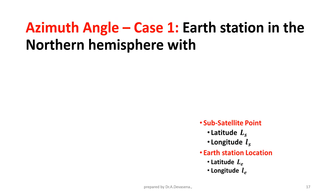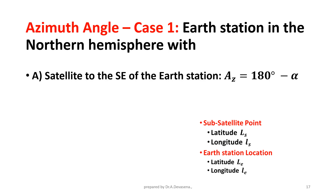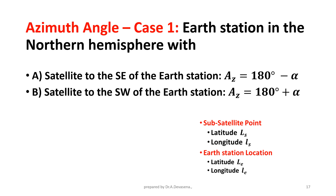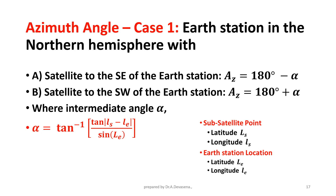Azimuth angle Case 1 — Earth station in the northern hemisphere. Condition A: satellite to the southeast of the earth station: A_EZ = 180° − α. Satellite to the southwest of the earth station: A_EZ = 180° + α, where alpha is the intermediate angle given by α = tan⁻¹(tan|l_s − l_E| / sin(L_E)).